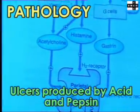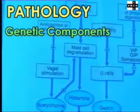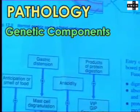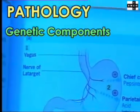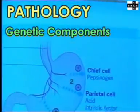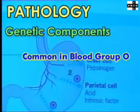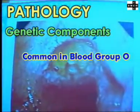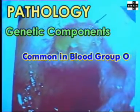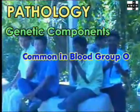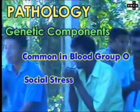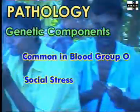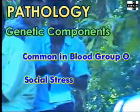Some genetic components are involved, such as the often-cited finding that ulcerations are more common in people with blood group O. Similarly, social stress has also been implicated in the etiology.